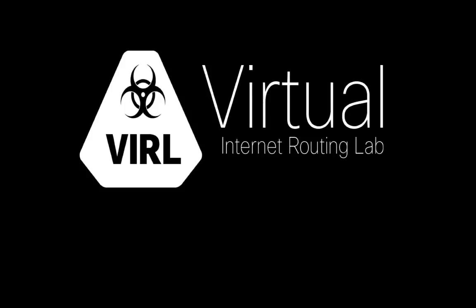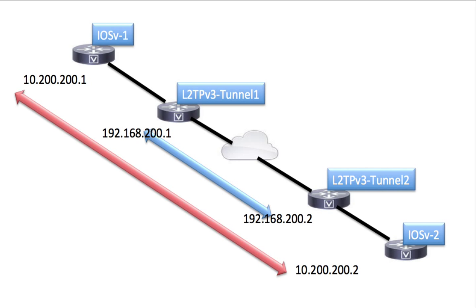In this video we're going to show you how you can use L2TP v3 as a tunneling mechanism to provide connectivity to external systems. The diagram shows the topology we're going to create — two separate simulations connected via a flat connector. The loopback addresses used for tunnel endpoints are 192.168.200.1 and 192.168.200.2, with a /30 network 10.200.200.0/30 running over the L2TP v3 tunnel connecting iOS v1 to iOS v2.